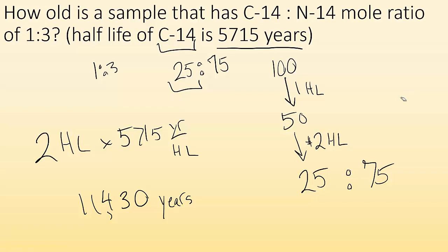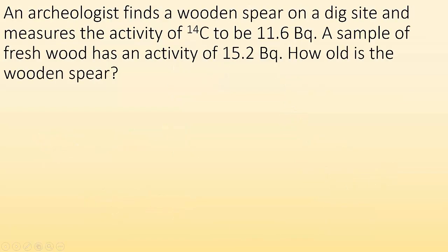Let me give you an example where you do have to work that out. So an archaeologist finds a wooden spear on a dig site and measures the activity of carbon-14 to be 11.6 Becquerels. A sample of fresh wood has an activity of 15.2 Becquerels. How old is the wooden spear? Well, first we need to go, all right, I'm going to use my first-order decay equation. So it's ln of At equals negative Kt plus ln of A0. Now, my A0 is this 15.2 because it's saying fresh wood has that activity. So once you cut down a piece of wood, it doesn't incorporate carbon-14 into its body anymore from the air because it's dead.